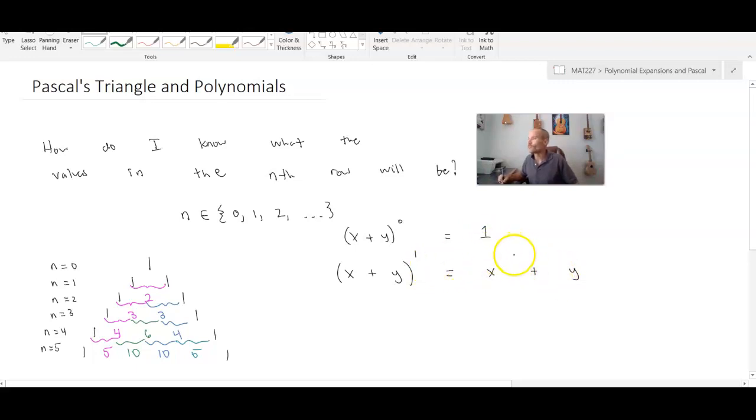Okay well one thing to notice already is that one, which corresponds to an exponent of zero, happens to also be this first value in Pascal's triangle in the zeroth row. X plus y to the first power, if I put coefficients in front of x and y, then notice that both of those are ones. And gosh that looks like those ones could be derived from the second row of Pascal's triangle.